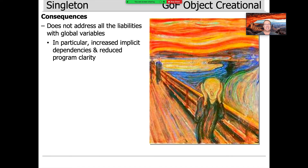Now let's talk about the downsides. This pattern does not address all the limitations with global variables. In particular, we still have implicit dependencies and reduced program clarity, because singletons appear in the implementation code but are not defined in the APIs. So if you want to copy that code and use it somewhere else, you have to bring along all the singletons — and that's what tends to irritate people about this pattern.